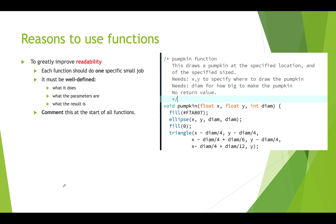You really want to comment all of this at the start of functions. Over here we have the pumpkin function that I created that draws pumpkins and so a good comment at the top of this would say this draws a pumpkin at specified location of the specified size and then it identifies what's needed, the data that's passed in, need x and y to specify where to draw the pumpkin, diam for how big to make the pumpkin, and it specifies that there's no return value here.